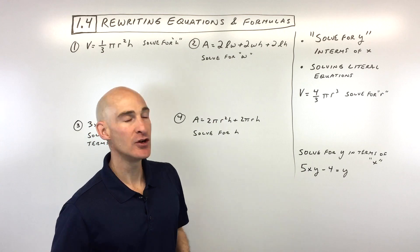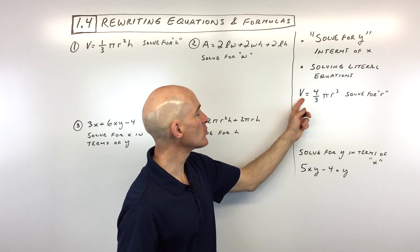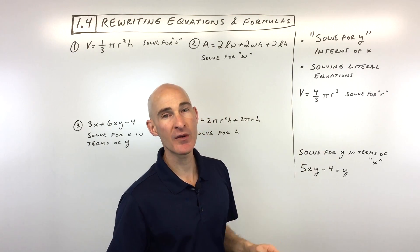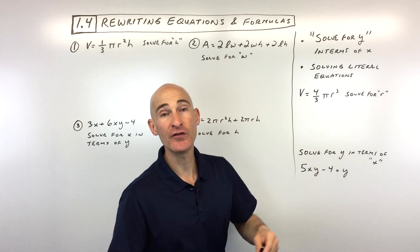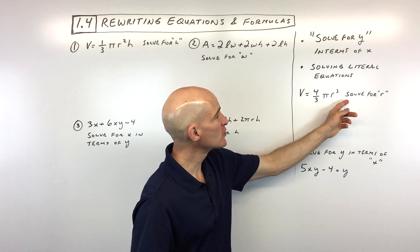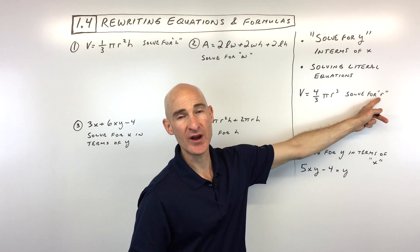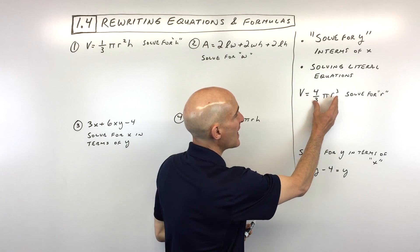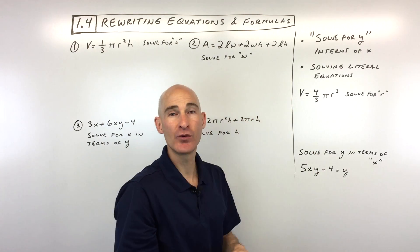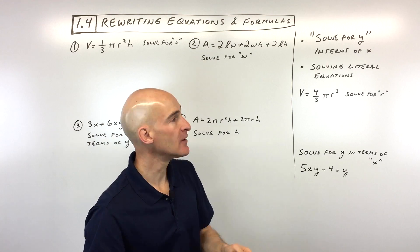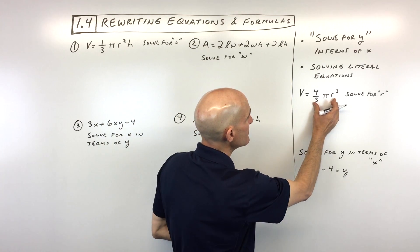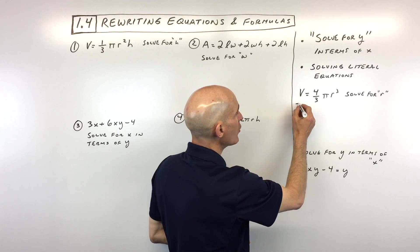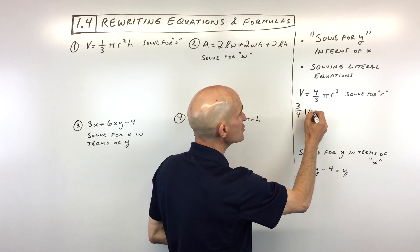The first example: Volume equals four-thirds pi r cubed — the formula for the volume of a sphere — and we're going to rewrite it to solve for r, the radius. The approach is to work from the outside in toward the variable you're trying to isolate. To get rid of the four-thirds, we're going to multiply both sides of the equation by its reciprocal.